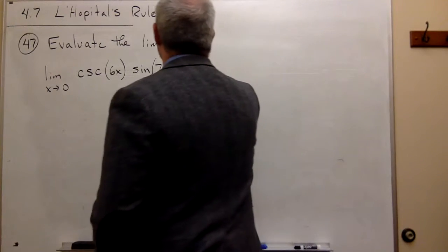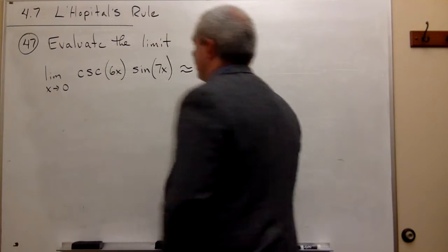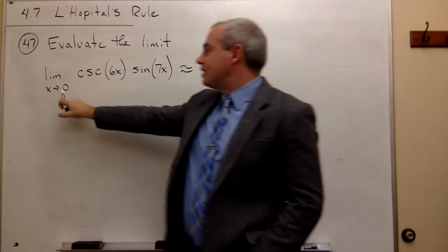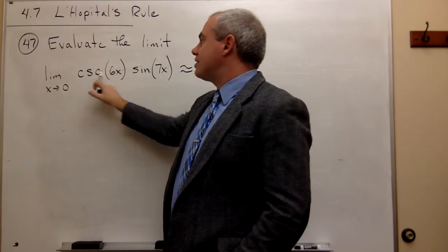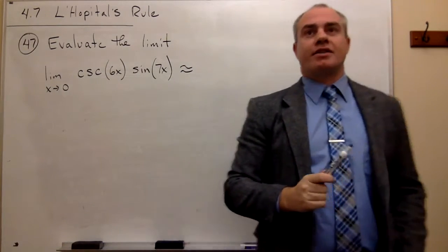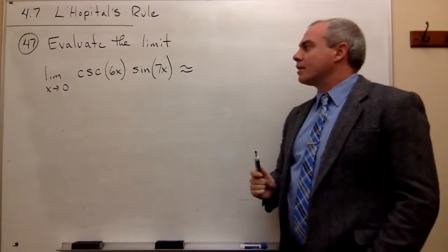So first let's just check out the form of this guy, and if I plug in 0 here I get cosecant of 0. Now cosecant of 0 is kind of an interesting one. Why?